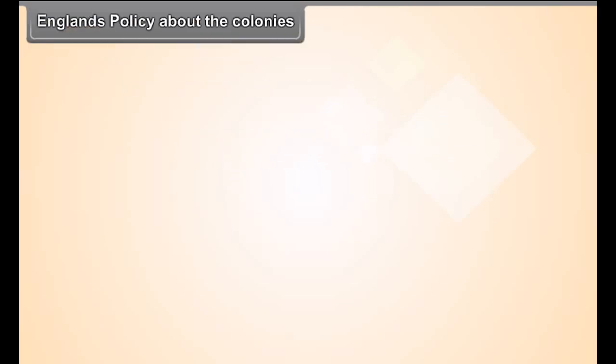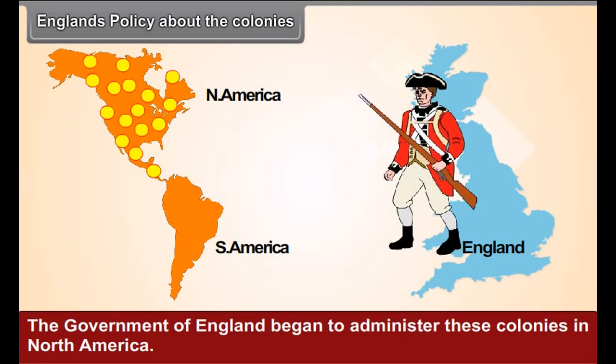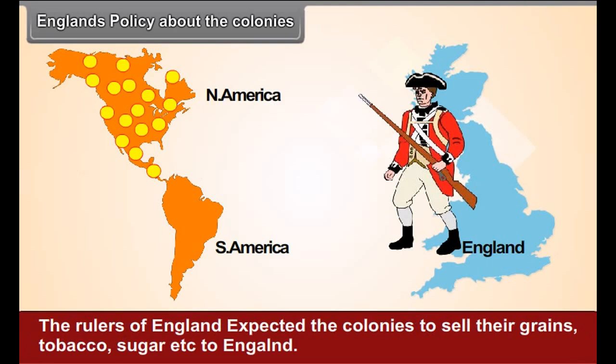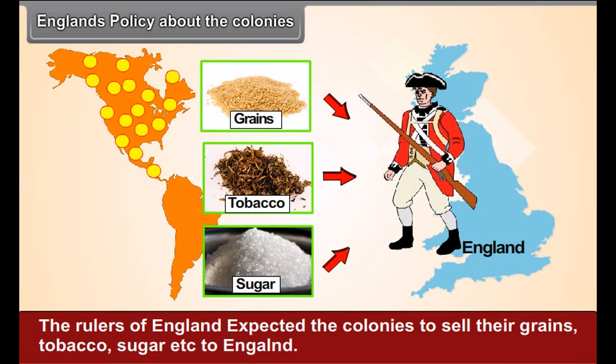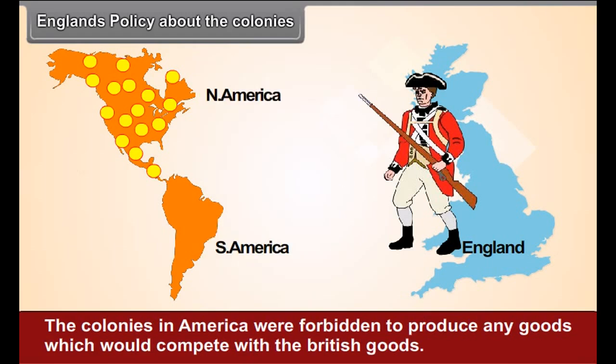England's Policy About the Colonies. The government of England began to administer these colonies in North America. The rulers of England expected the colonies to sell their grains, tobacco, sugar, etc. to England. The colonies in America were forbidden to produce any goods which could compete with British goods.